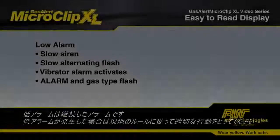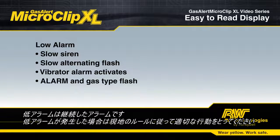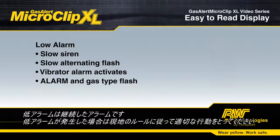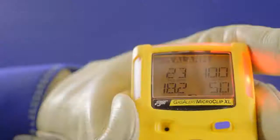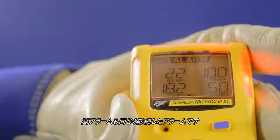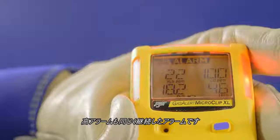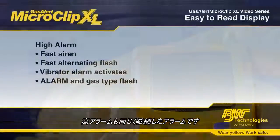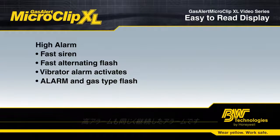The alarm type will also appear. Low alarms are instantaneous alarms. Take appropriate actions in line with your on-site procedures in the event your detector goes into low alarm. High alarms are also an instantaneous alarm and are a secondary warning level.